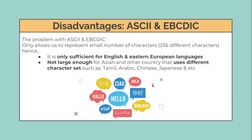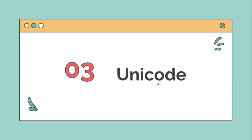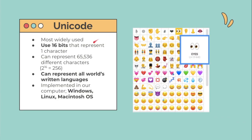That is why we use another information coding scheme called Unicode. Unicode is the most widely used and commonly used coding scheme today. It uses 16 bits to represent one character, so it can represent 65,536 different characters. Unicode can represent all the world's written languages, including emoji, as you can see here. Unicode is implemented in computer operating systems like Windows, Linux, and Macintosh.